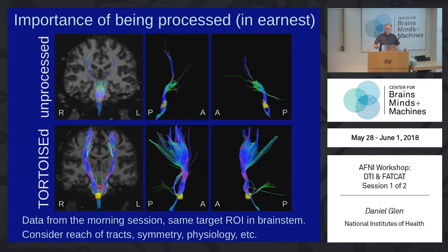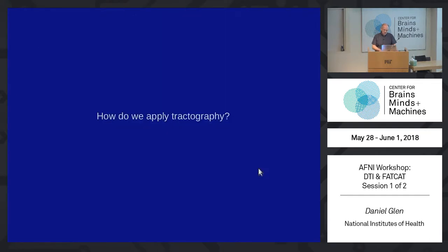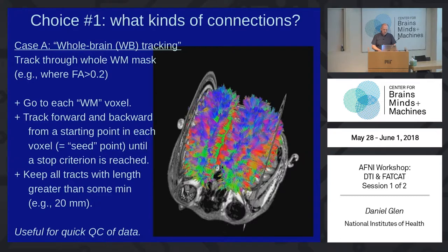Generally we recommend using the TORTOISE package. If you don't process your data and just do your tensor version, you will end up with something like this for your fibers — a side view. But if you process with TORTOISE, instead you get something like this. Instead of what looks like a sick cricket, you end up with a pretty hummingbird or something like that.